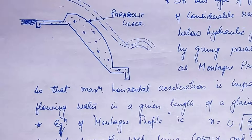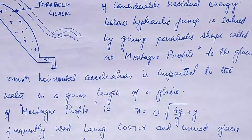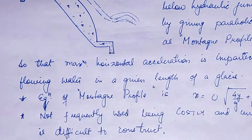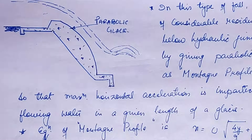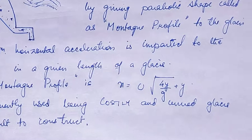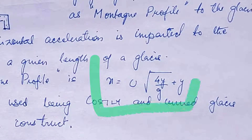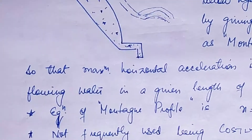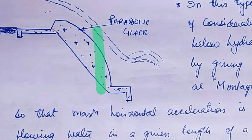The mountain type profile is given so that maximum horizontal acceleration is imparted to the flowing water in a given length of glacis. The equation of this mountain type profile is: x = u × √(4y/g) + y, where g is the force of gravitation and u is the vertical distance from the crest.